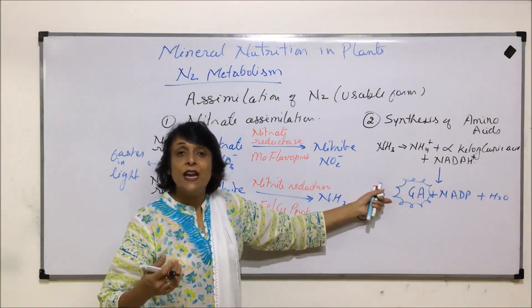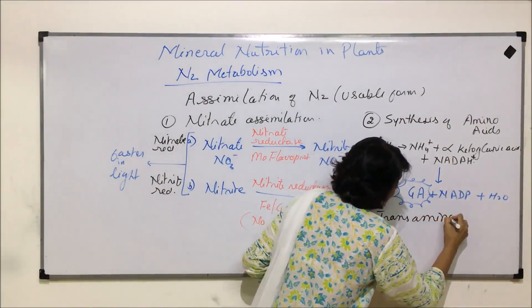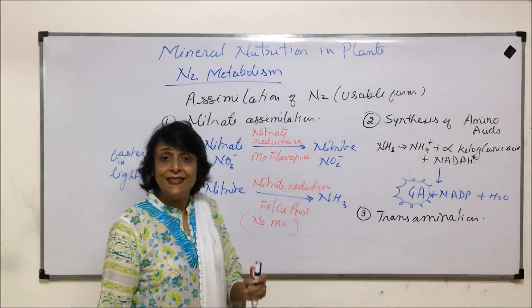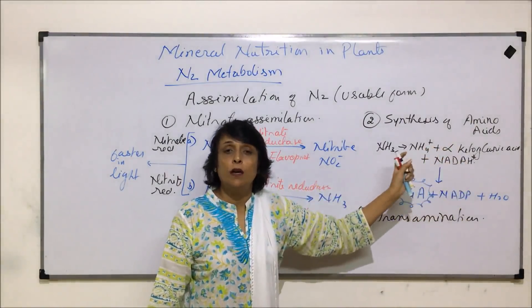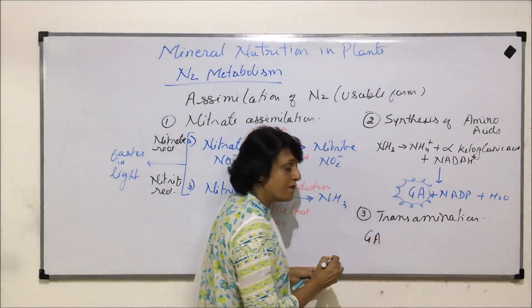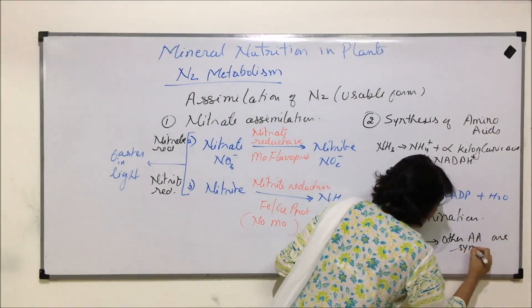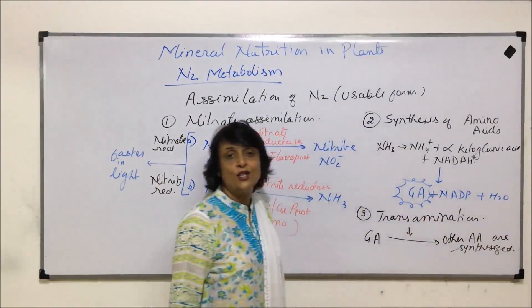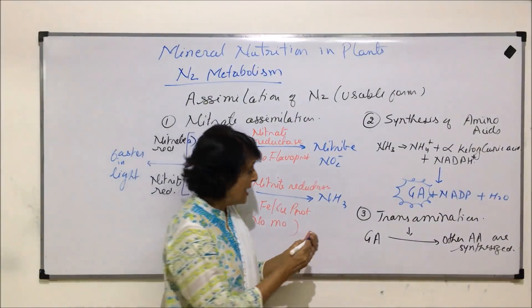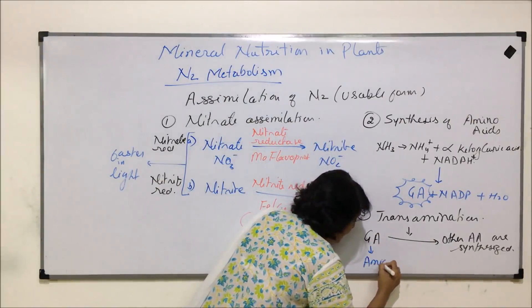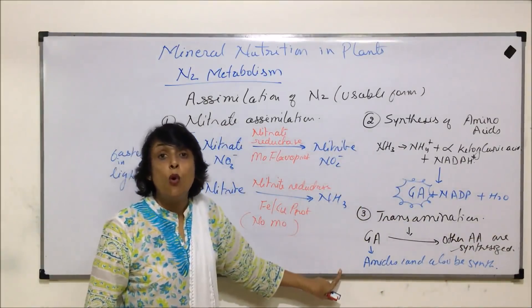From this, the plant would need many more amino acids. That process is known as transamination. In transamination, other amino acids are synthesized by transferring the amino group from this amino acid to form other amino acids. So from glutamic acid, by this process of transamination, all other amino acids would be synthesized using the amino group from the same amino acid.